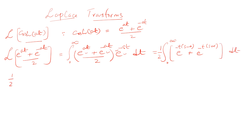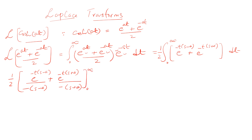Now when we integrate this, what we get is 1/2 multiplied by e^(-t(s-a)) / (s-a) plus e^(-t(s+a)) / (s+a). We should be careful while doing the integration so that we don't miss anything in this step. Now I will apply the limits; the upper limit is infinity.